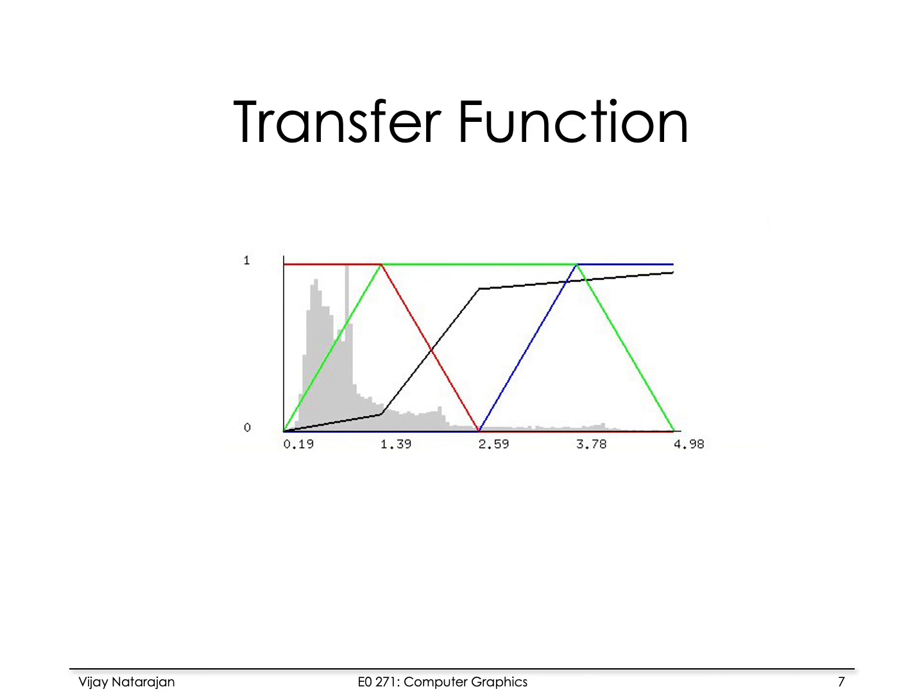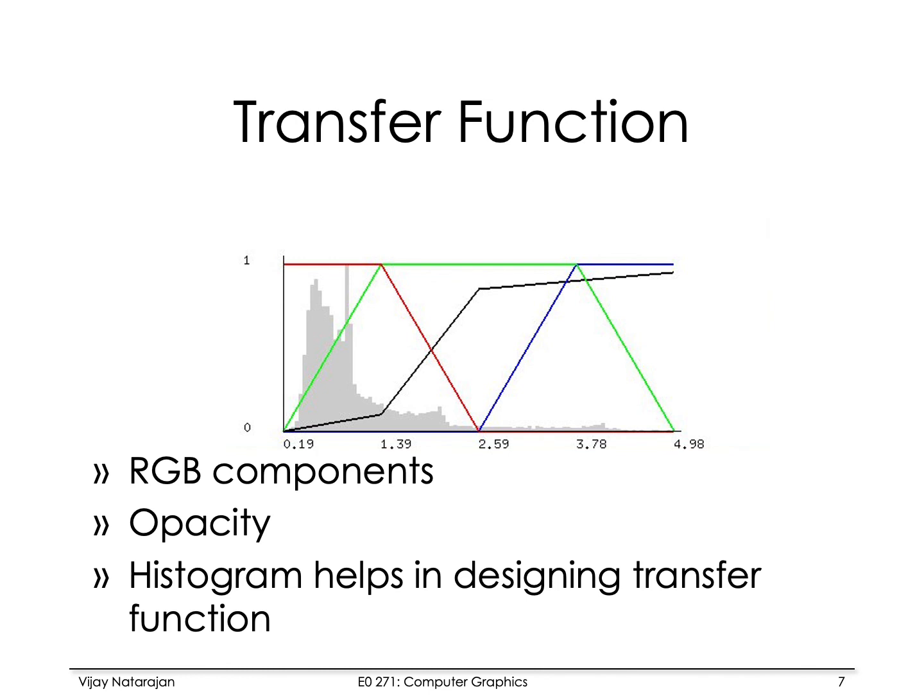Finally, the transfer function essentially allows us to map scalar values on the x axis to the RGB components of color and opacity shown here in black. The transfer function is essentially a combination of four 1D functions: one for R, G and B components and the fourth one for the opacity. Designing this transfer function is one of the important challenges in volume rendering. The histogram of the scalar field is often used to design the transfer function, especially if it is done by an expert user.